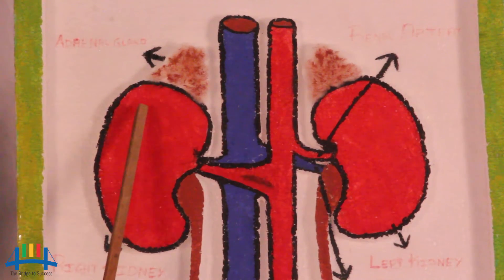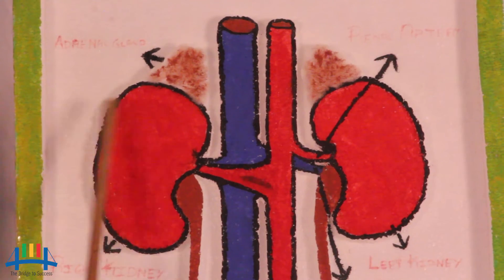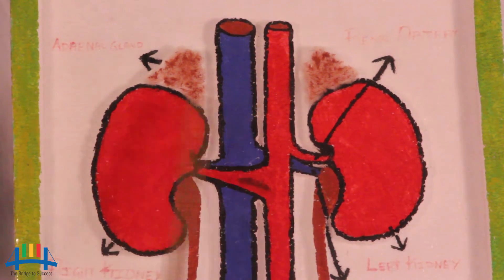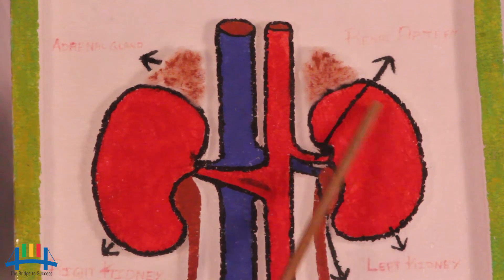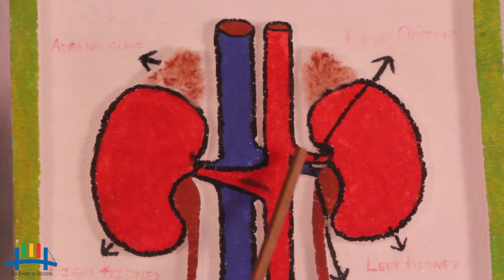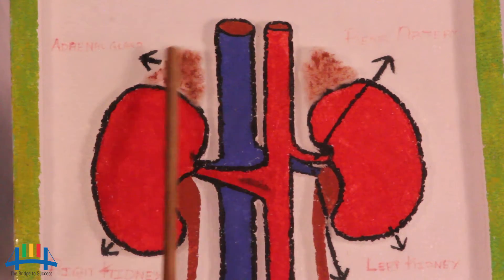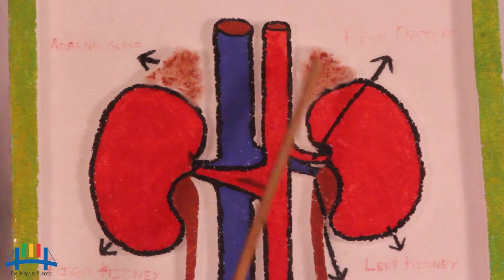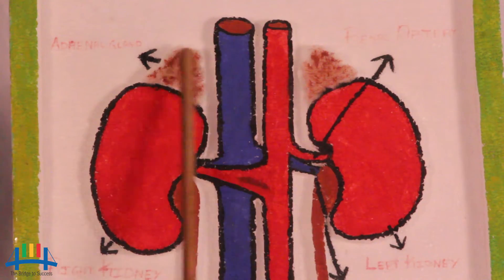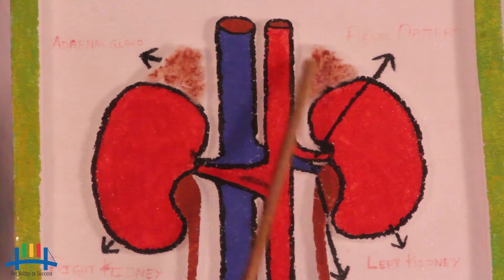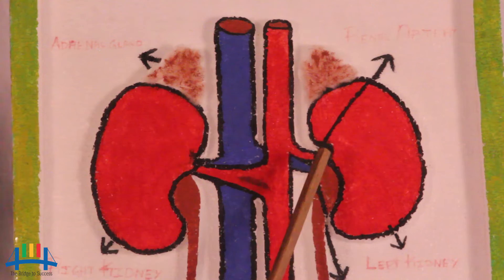Inside the kidneys, renal pyramids are present on the inner side. Seven to nine renal pyramids are present in each kidney. Above each kidney, one gland is present called the adrenal gland, which sits on top of the kidney and is referred to as the cap of the kidney.